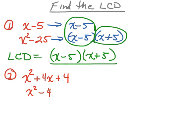Second example. We're going to assume that x squared plus 4x plus 4 is one of our denominators, and x squared minus 4 is the other denominator. We're looking for the least common denominator, so we're going to take each of these denominators and factor them completely.